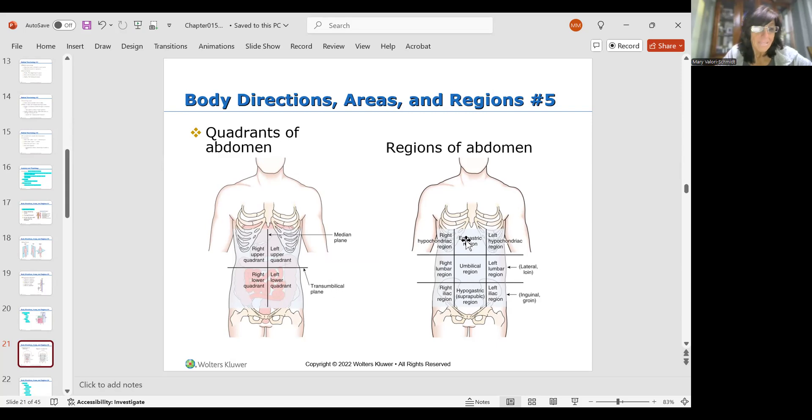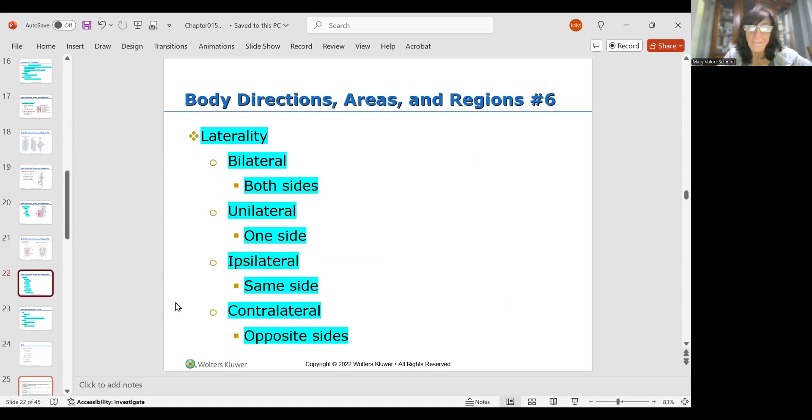And next, body directions also talks about laterality. So if we say bilateral, both sides. Unilateral, one side. Ipsilateral, same side. Contralateral, opposite sides. Make sure you know those.